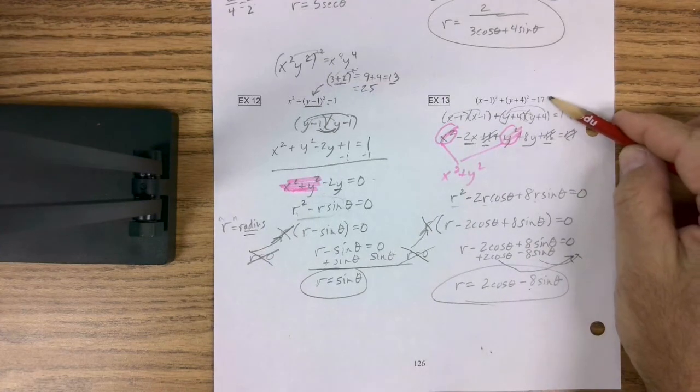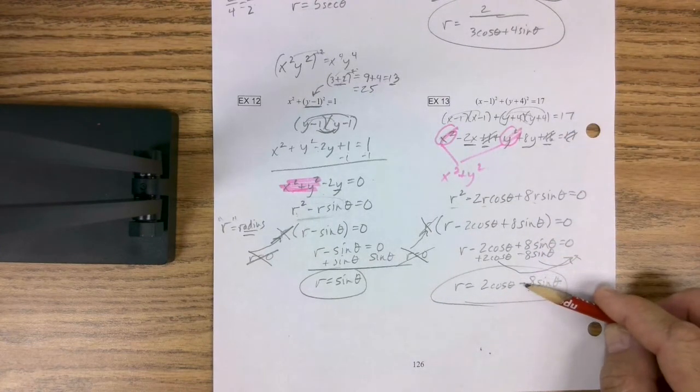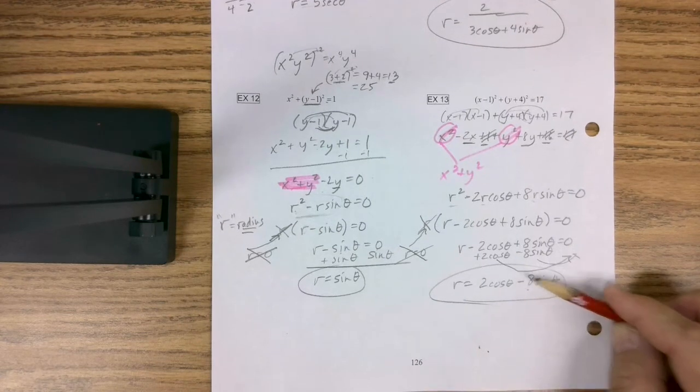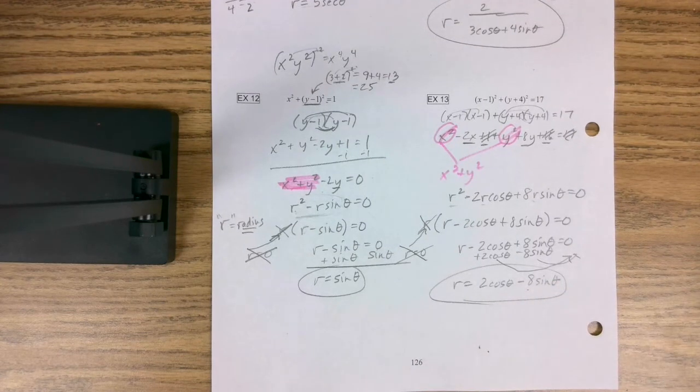So if I was to graph this, it would be a circle. If I was to graph this, it would be a circle. Crazy. All right. There you go. Good luck on your assignment. Thank you.